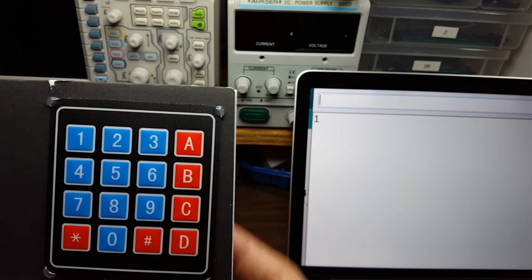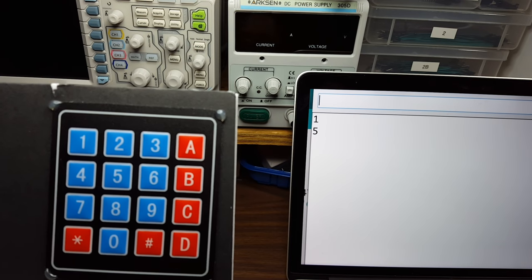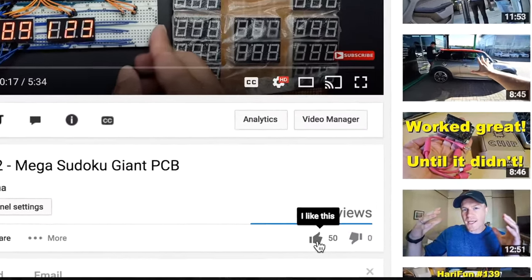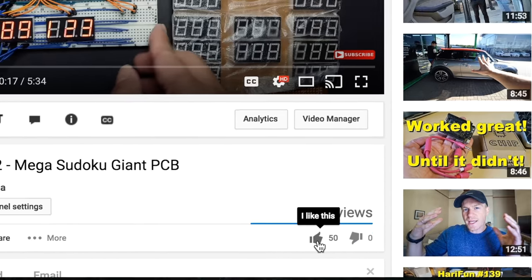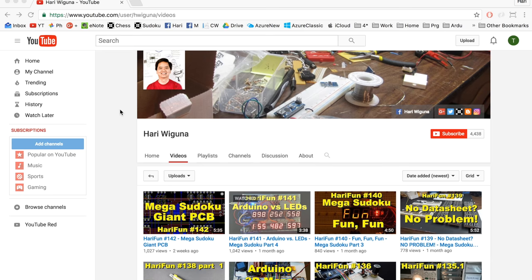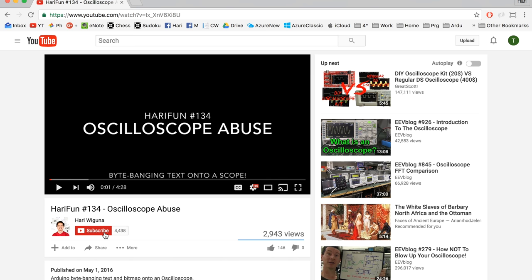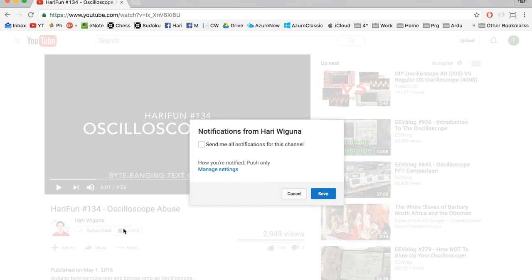So that's how you can read a 4x4 keypad using just one analog pin. I think it's pretty cool. If you agree please hit thumbs up so youtube would recommend this video to other viewers. If you like this kind of content check out my other videos and if you don't want to miss future videos make sure you hit that notification bell icon so you'll get an email every time I upload a new video. Well thanks for watching guys. Bye bye.